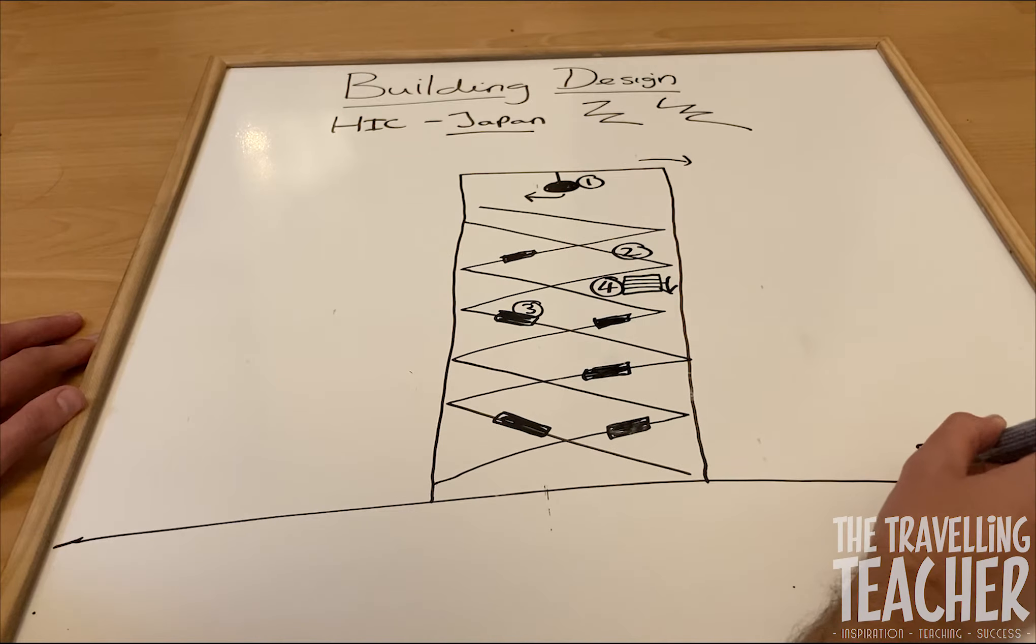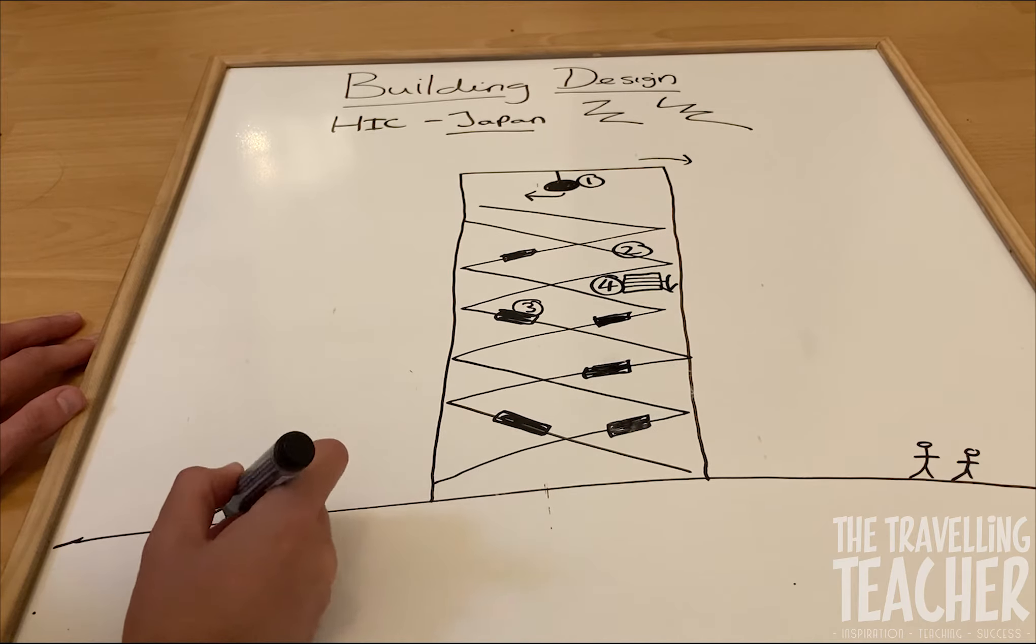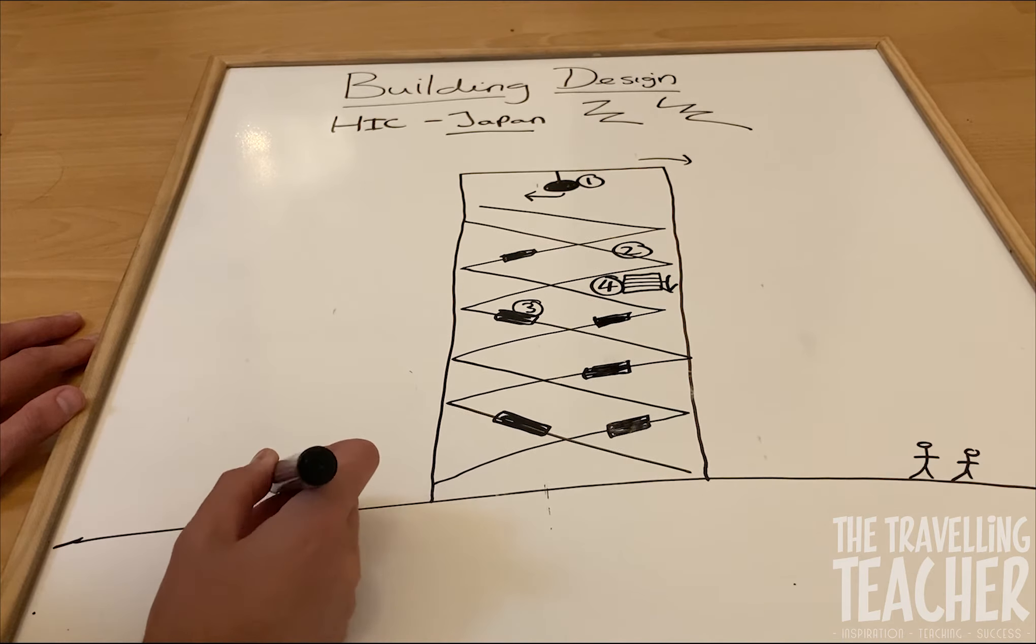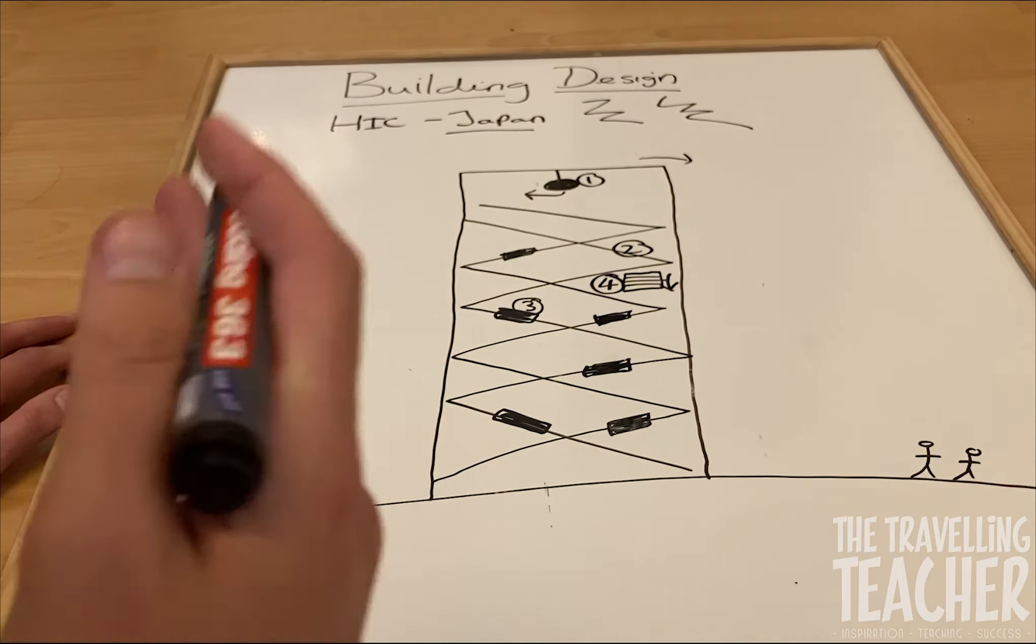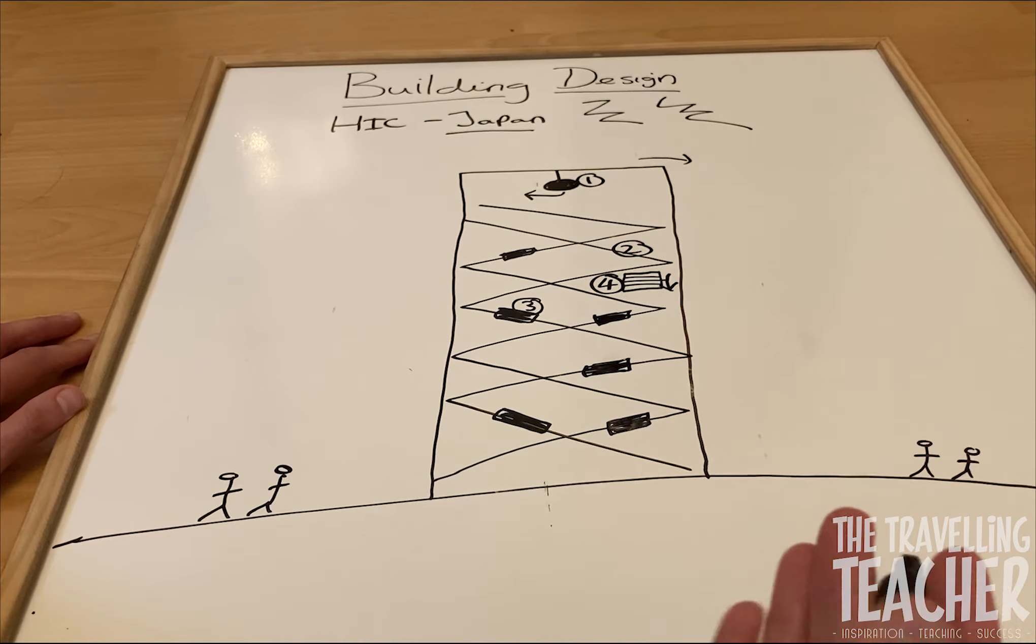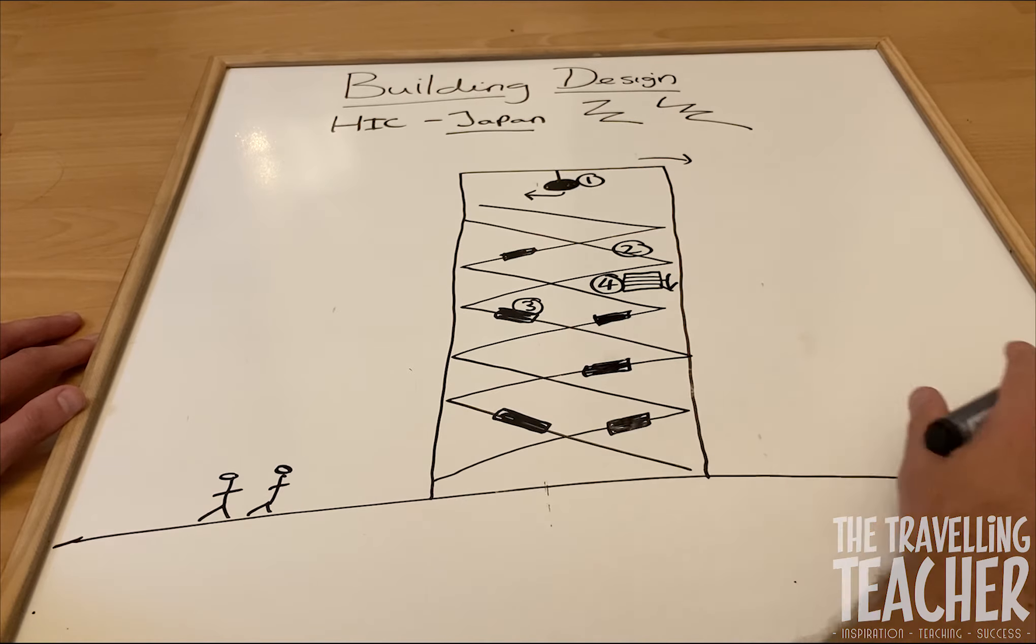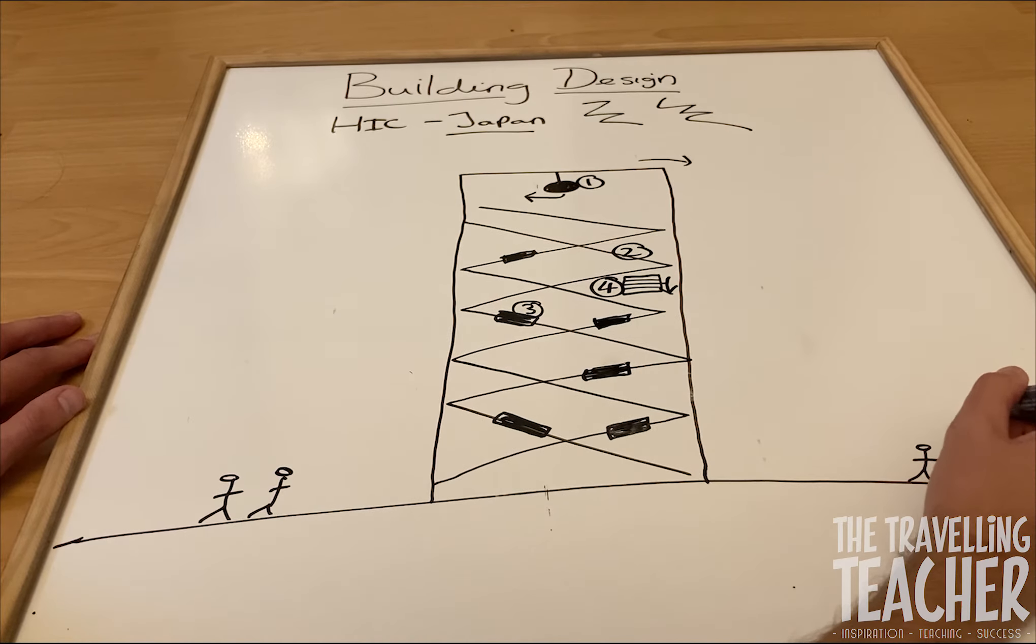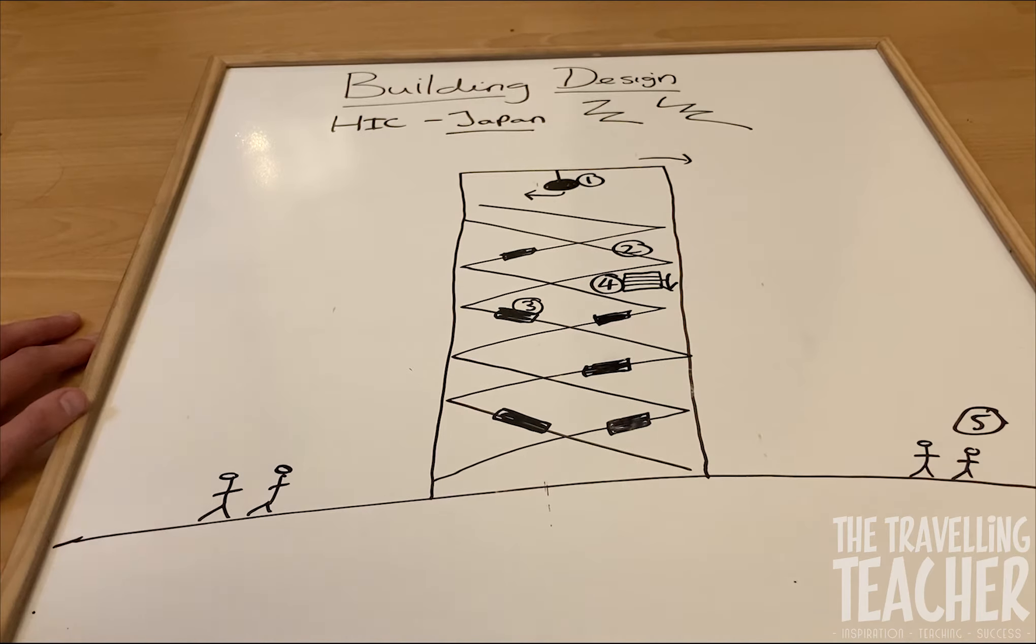So just in case the building did collapse, it's not going to cause as much damage by falling onto another building. So hopefully around the building there's lots of space just in case the building did collapse.